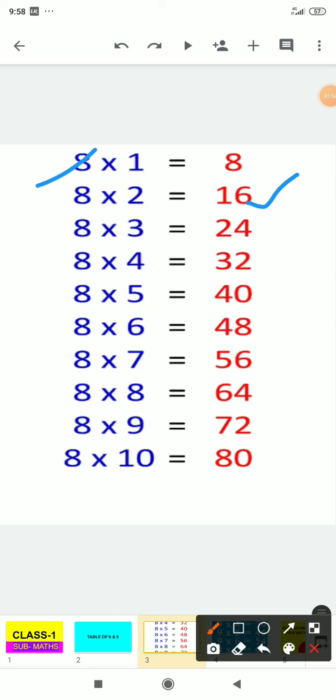8 times 3 is 24, 8 times 4 is 32, 8 times 5 is 40, 8 times 6 is 48, 8 times 7 is 56, 8 times 8 is 64, 8 times 9 is 72, 8 times 10 is 80.